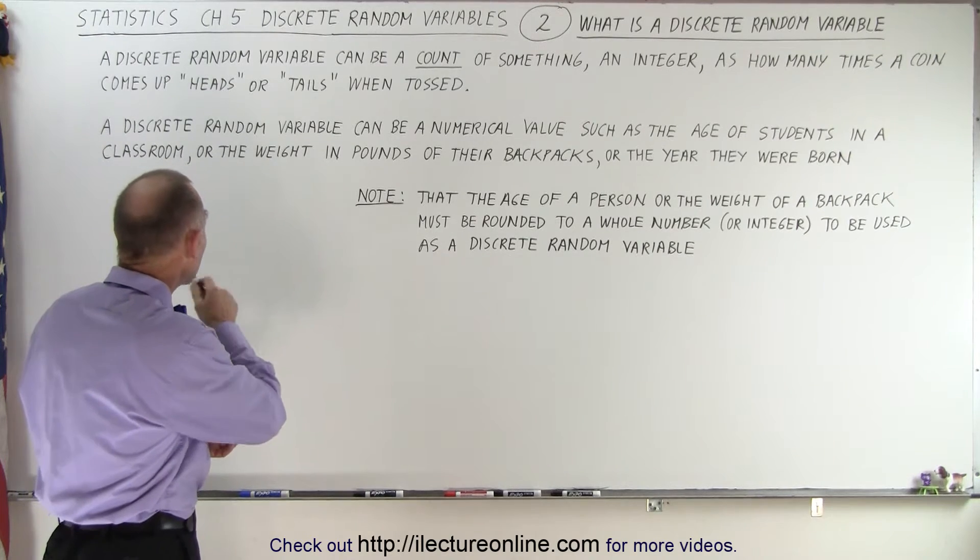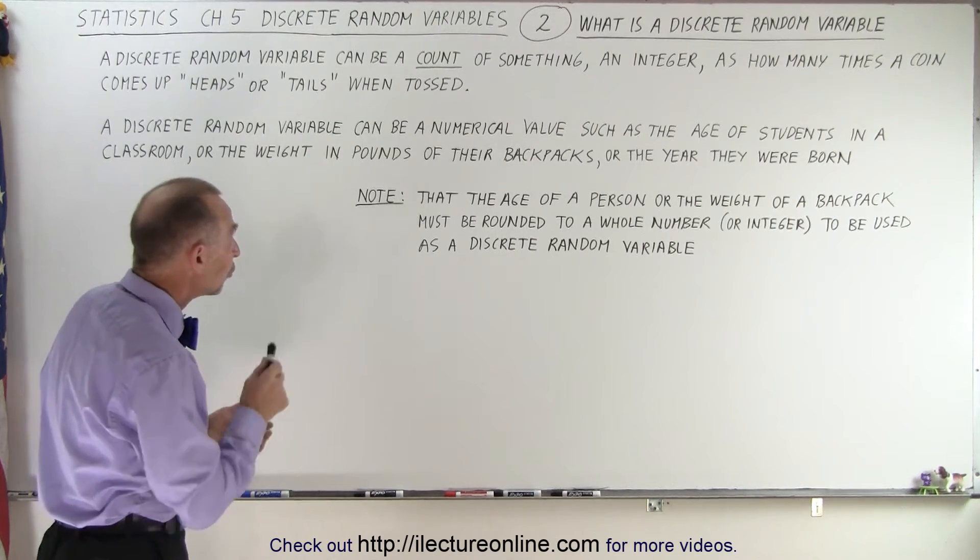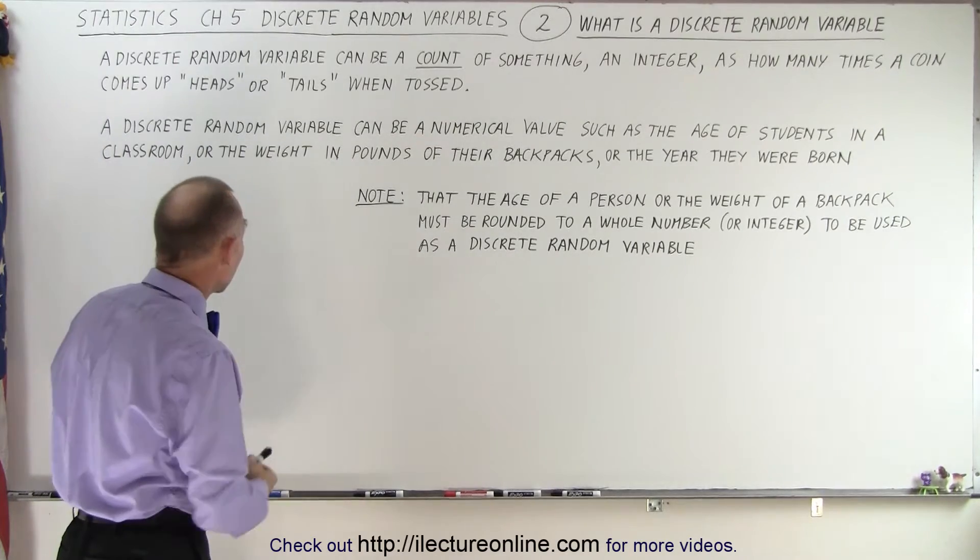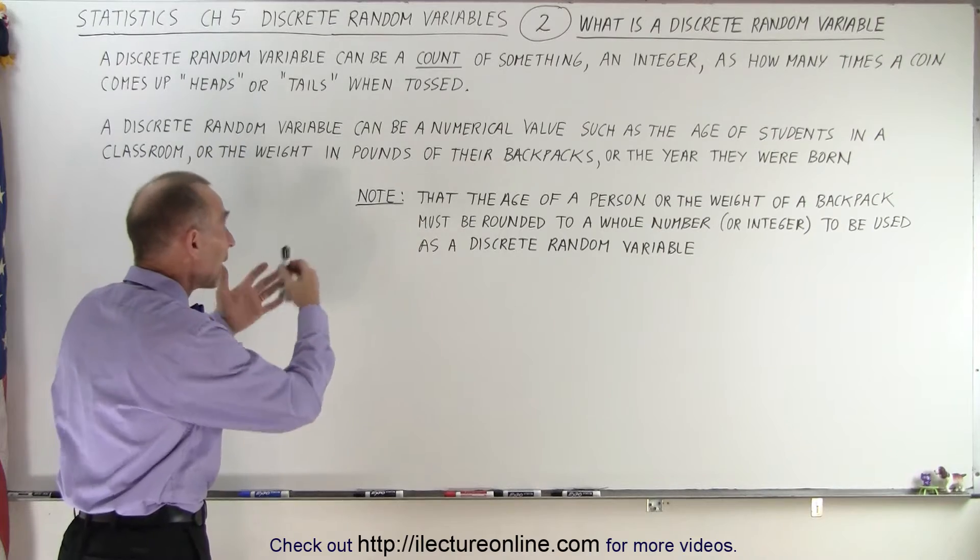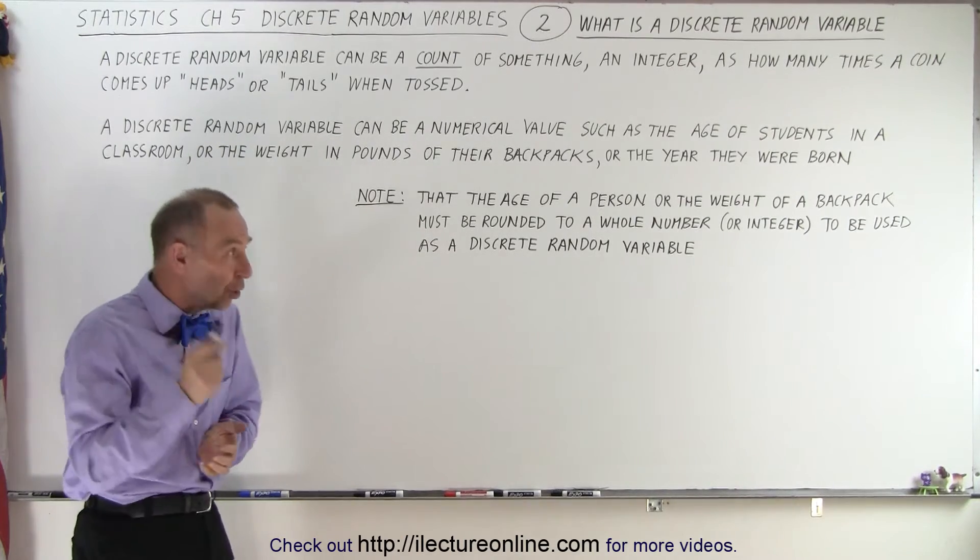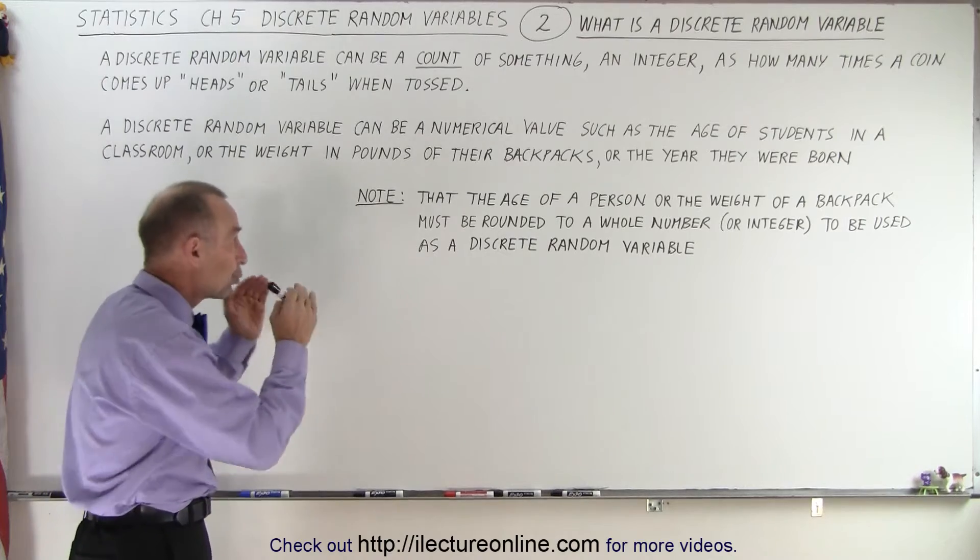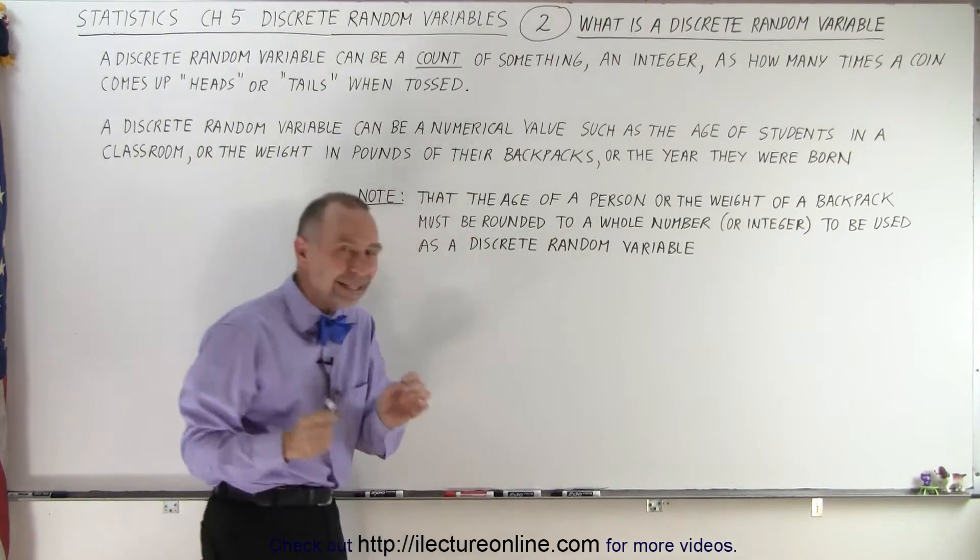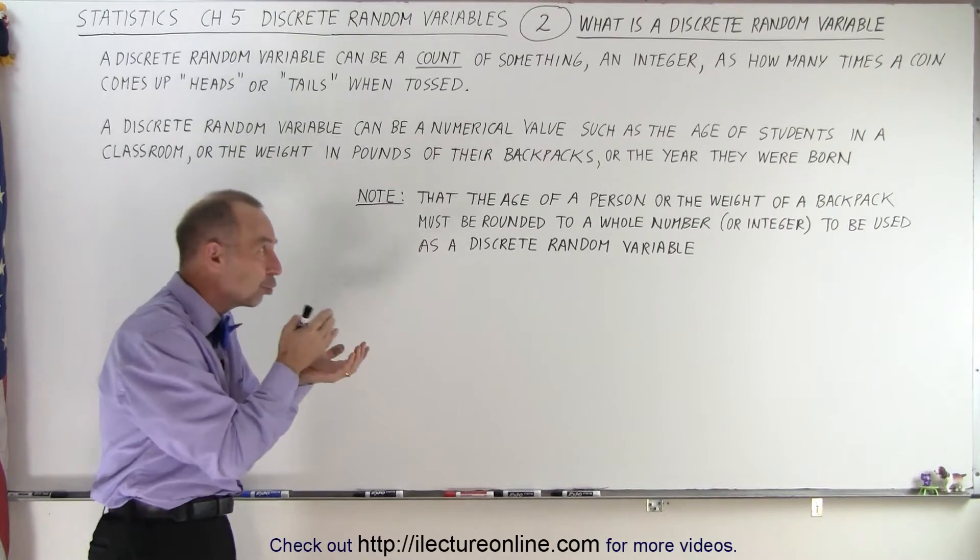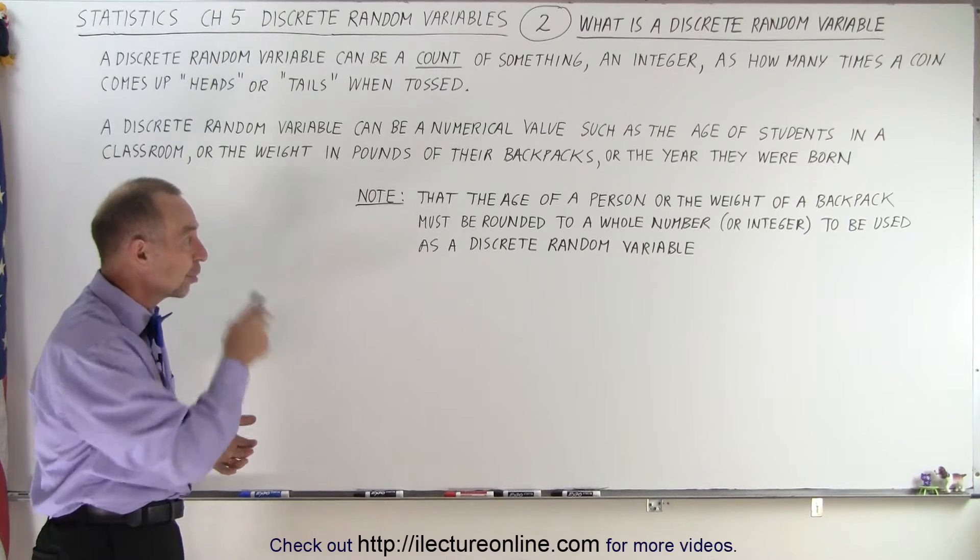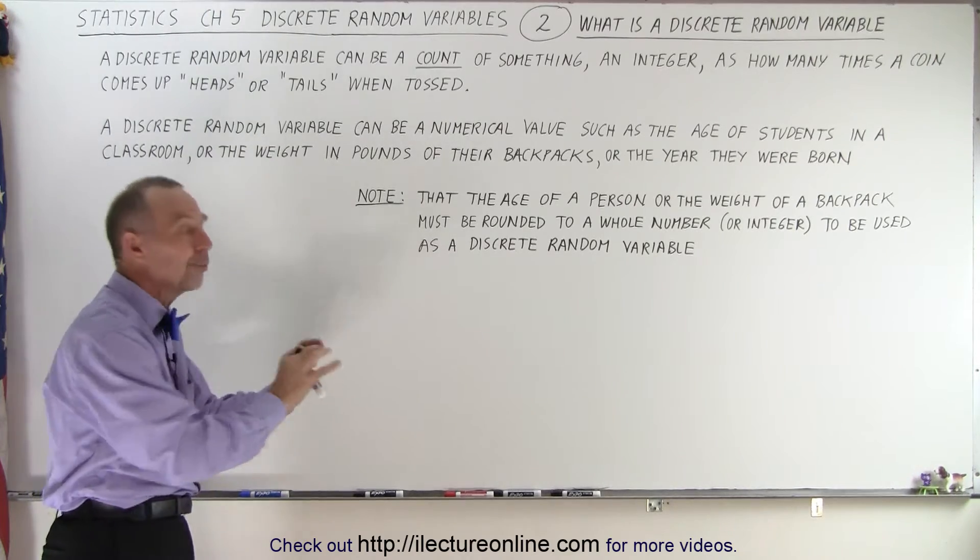But a discrete random variable can also be a numerical value representing the age of students in a classroom, the weight in pounds of their backpacks, or the year when they were born. Note that if you want to make a discrete random variable, the age of a person or the weight of a backpack needs to be rounded off to the nearest whole number or integer to be used as a discrete random variable.